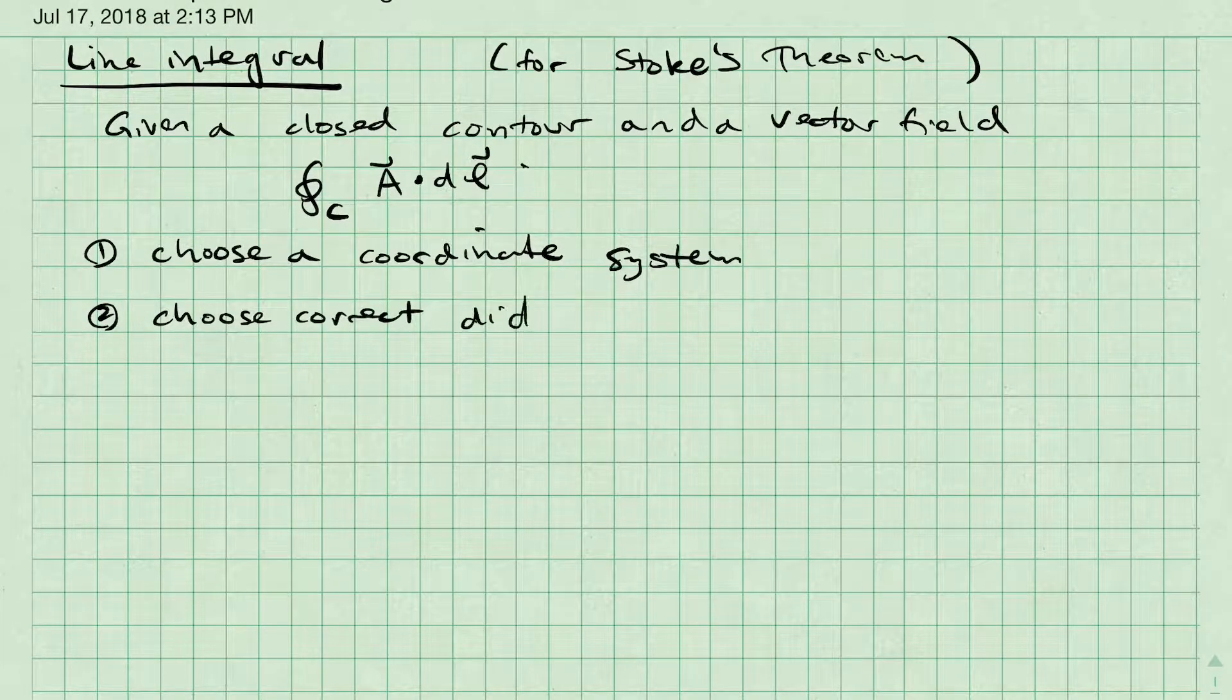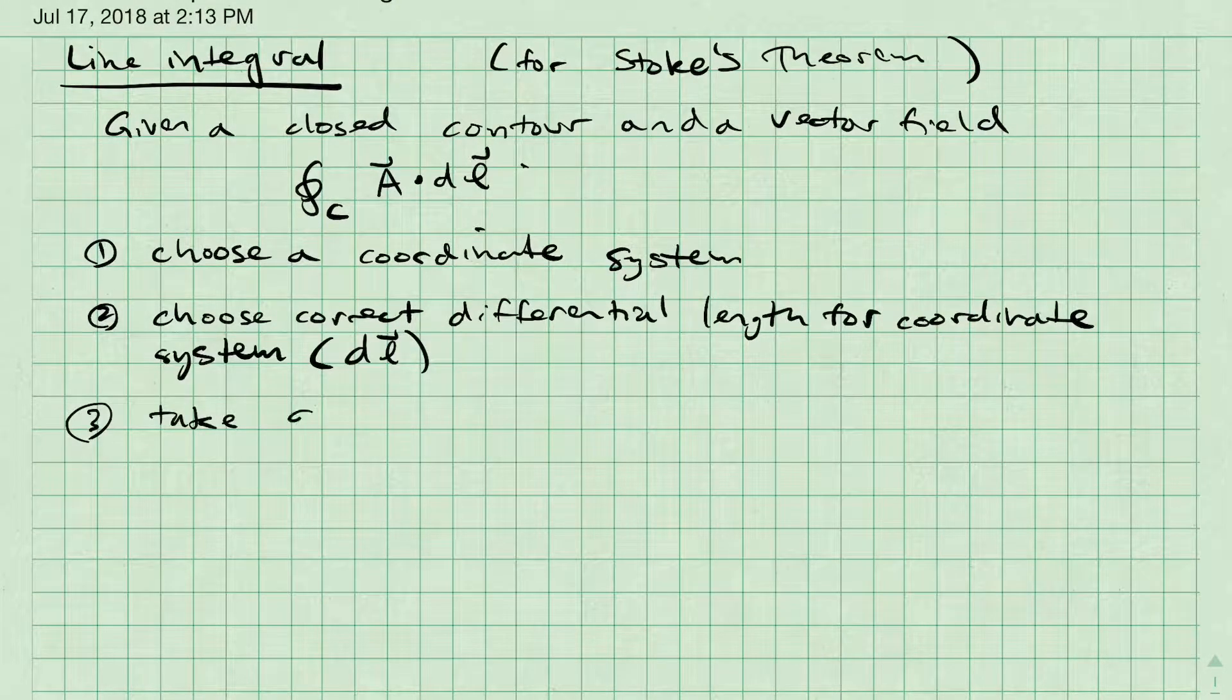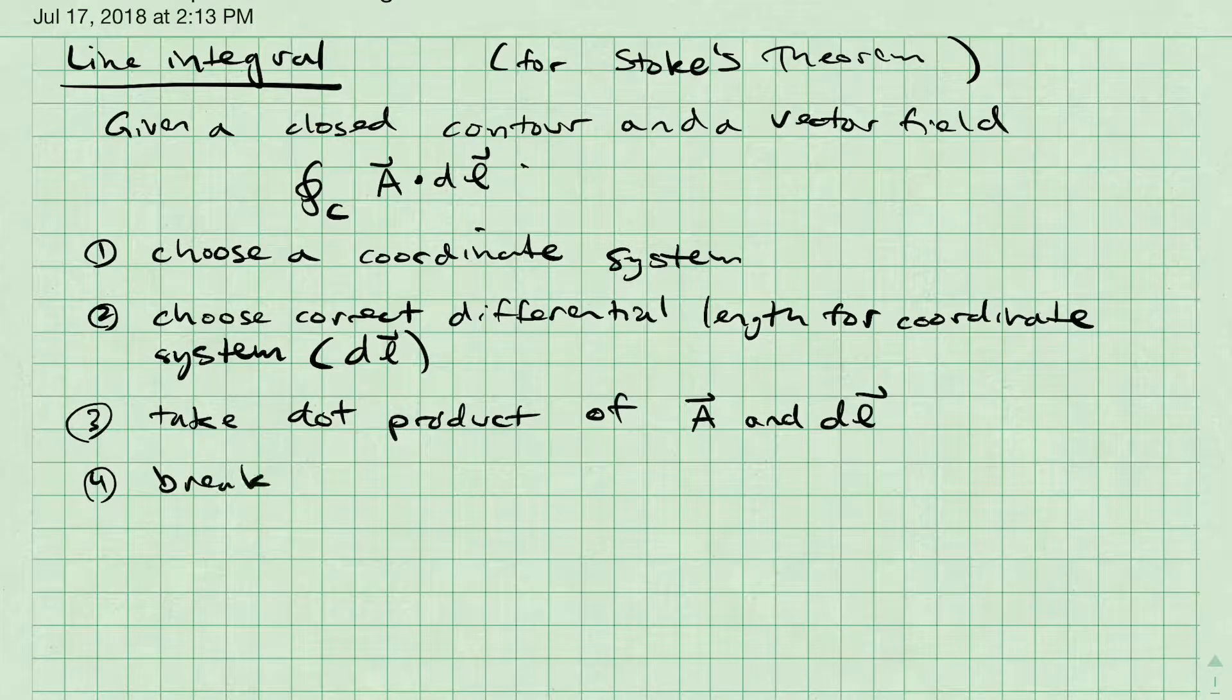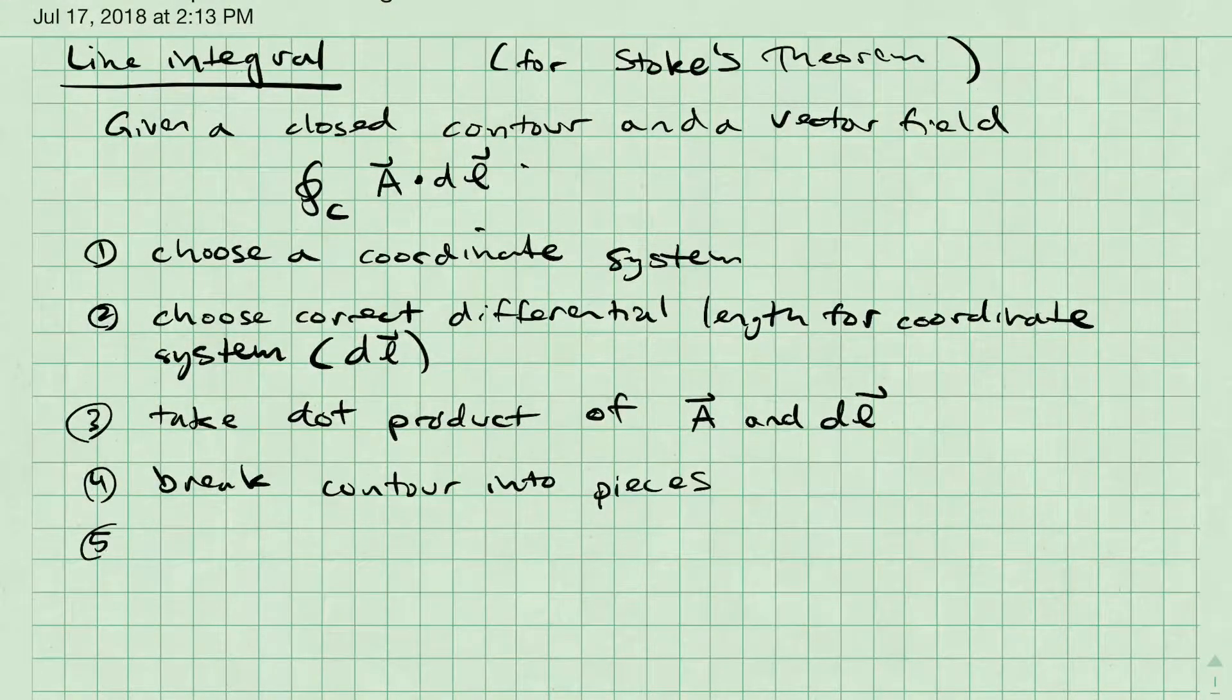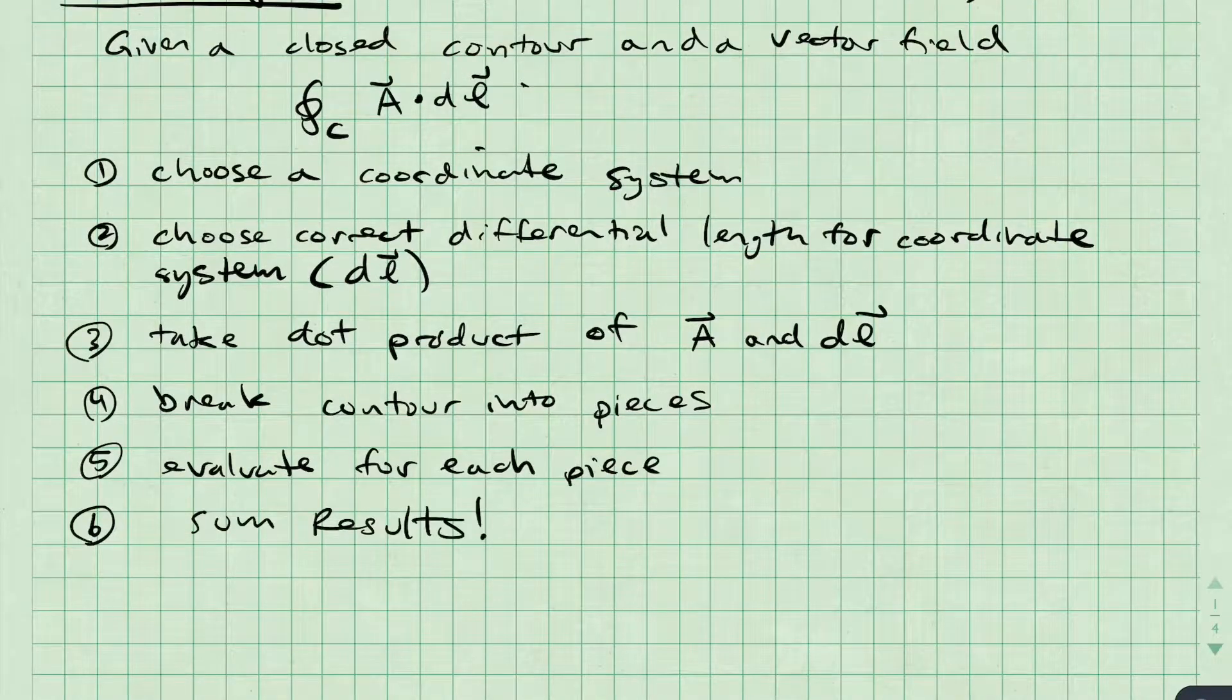The first step is to choose a coordinate system. Then we're going to choose the correct differential length for the coordinate system. We then take the dot product defined by my integral equation above. Then I'm going to break the contour into pieces that are easy to integrate over, evaluate for each piece, and sum the results to get the total solution.